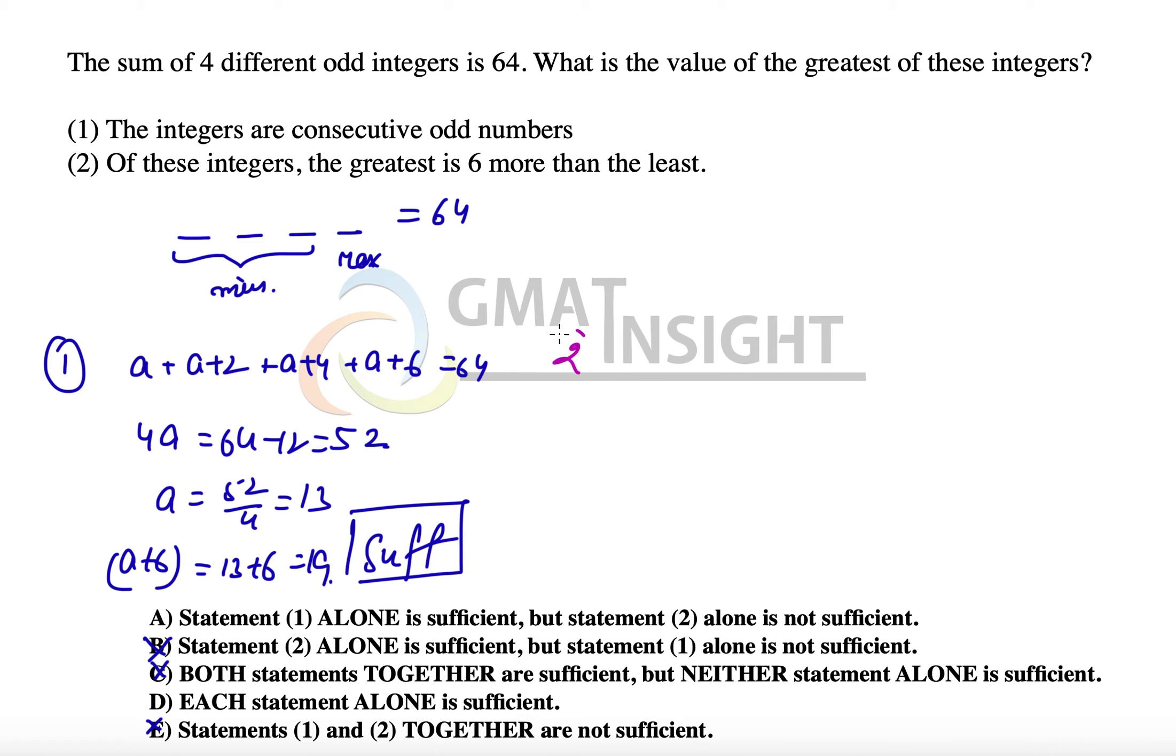Let's check the second statement now. The second statement says that of these integers, the greatest is 6 more than the least. So that once again ensures that the four numbers, the four odd numbers that we are taking, must be consecutive.